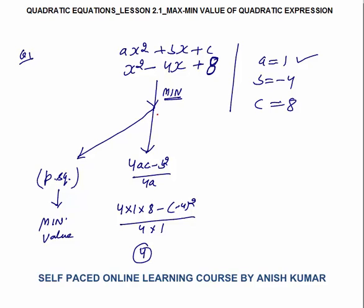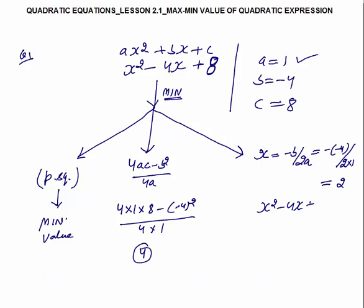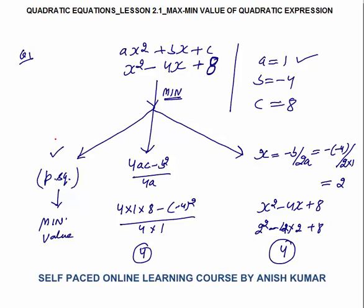A third way: you know at what point the minimum value will come. Minimum value occurs at x = −b/(2a) = −(−4)/(2×1) = 4/2, that is x = 2. When x = 2, put into x² − 4x + 8: you get 2² − 4×2 + 8 = 4 − 8 + 8 = 4. Again the value is 4. So there are 3 ways: either use the perfect square method from lesson 1, apply the formula, or put x = −b/(2a) directly. In this case we get minimum value = 4.